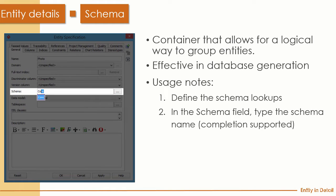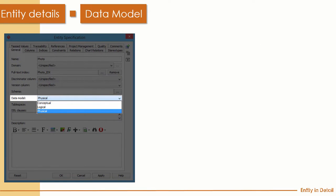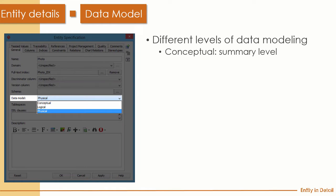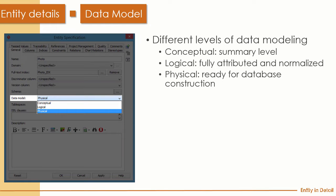Regarding the data model types — conceptual, logical, and physical — in one diagram you can specify the level. Conceptual is summary level. Logical is fully attributed and normalized. Physical is ready to generate the database. In the same diagram you can specify different entities at different levels.